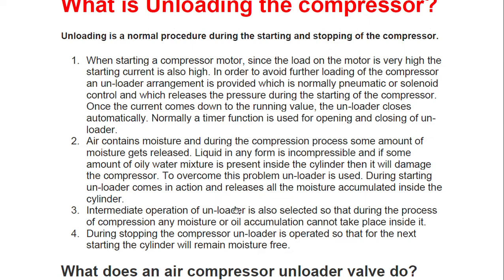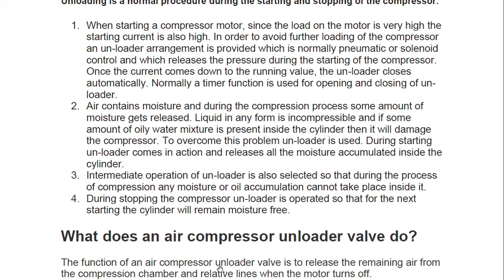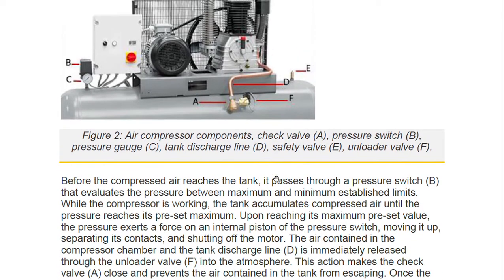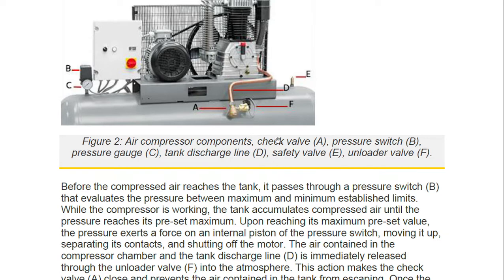Intermediate operation of the unloader is also used so that during compression, moisture or oil accumulation cannot take place inside it. During stopping, the unloader is operated so that for the next start the cylinder will remain moisture free. The function of an air compressor unloader valve is to release the remaining air from the compression chamber and relief line when the motor turns off.